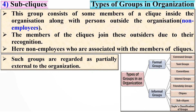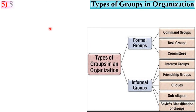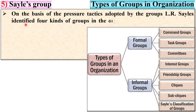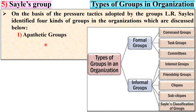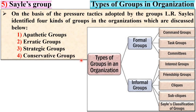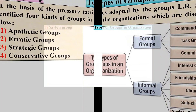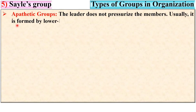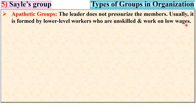Now the last one: Silas groups. On the basis of pressure tactics adopted by groups, L.R. Silas identified four kinds of groups in organizations: apathetic groups, erratic groups, strategic groups, and conservative groups. First, apathetic groups: the leader does not pressurize the members. Usually formed by lower-level workers who are unskilled and work on low wages.